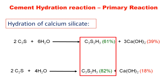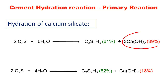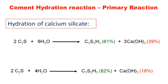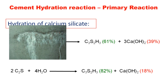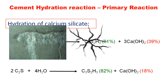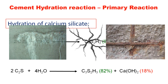The CSH gel is the hydration product responsible for strength in mortar and concrete. The calcium hydroxide liberated does not contribute to strength and instead creates durability problems. Over time, the calcium hydroxide present in concrete reacts with water or harmful external components, leading to leaching, expansion, cracking, spalling of concrete, or even corrosion of reinforcement.